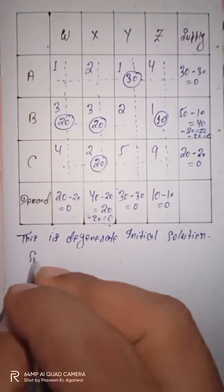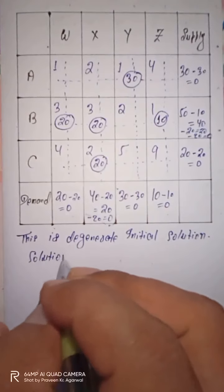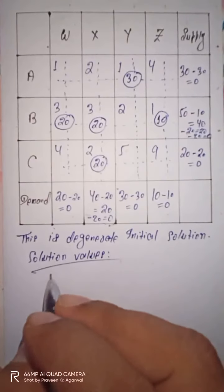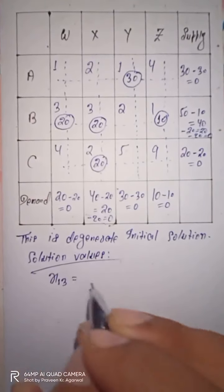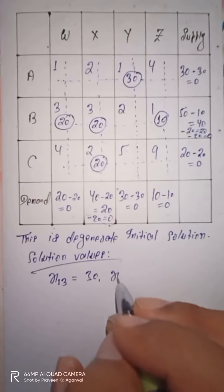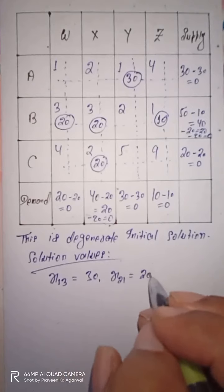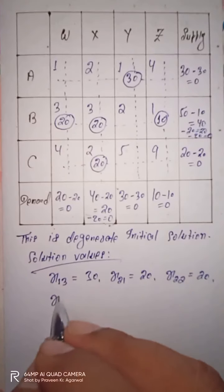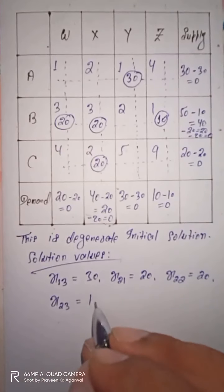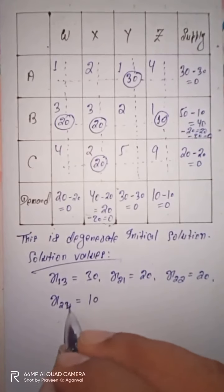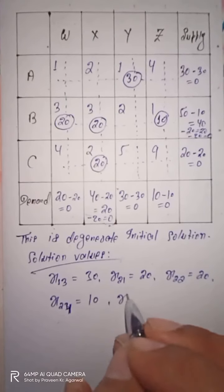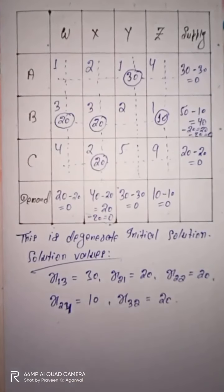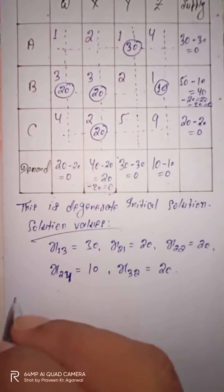Now let us determine the solution values. The solution values are: x(1,3) = 30, x(2,1) = 20, x(2,2) = 20, x(2,4) = 10, and x(3,2) = 20. Now I need to find out the total transportation cost.